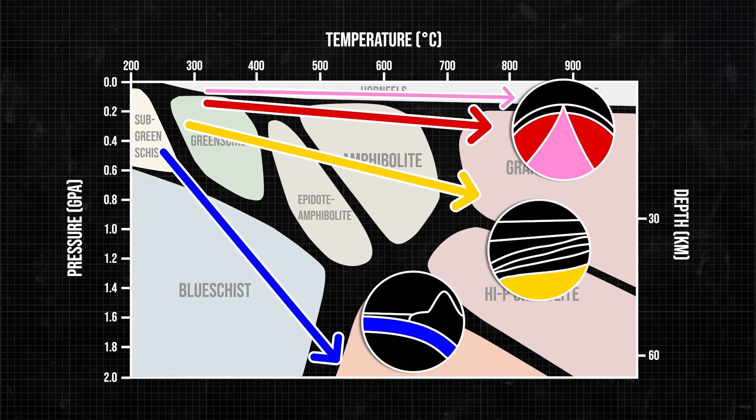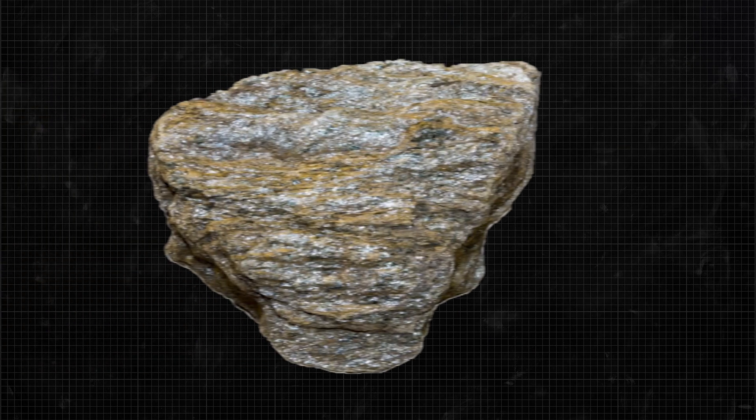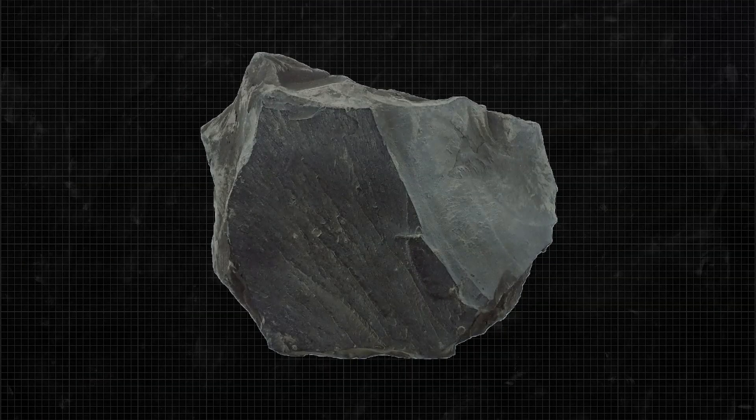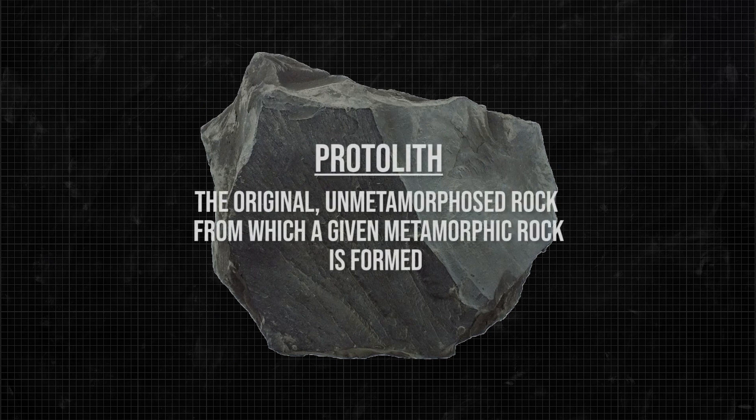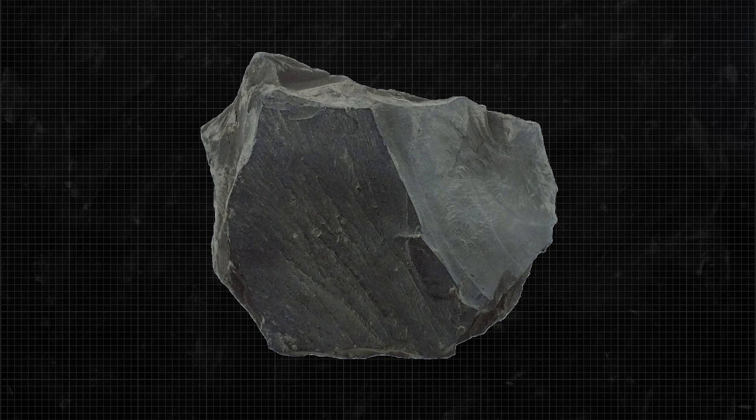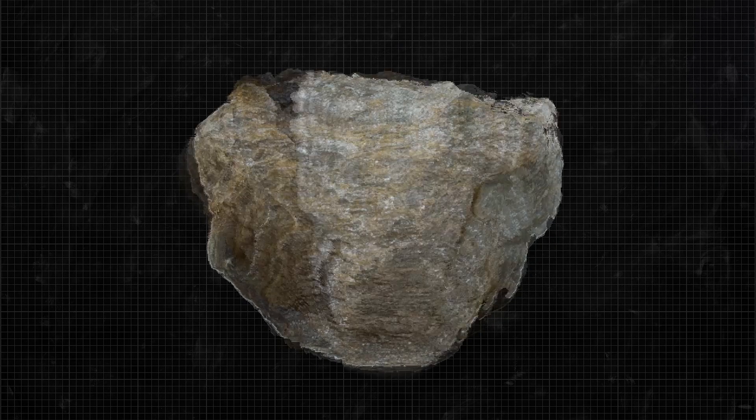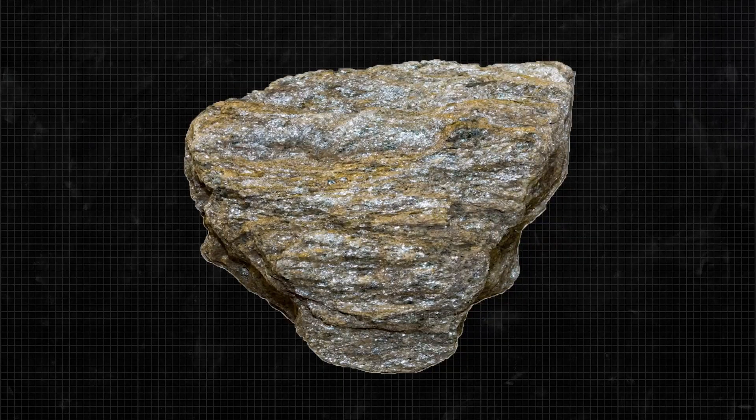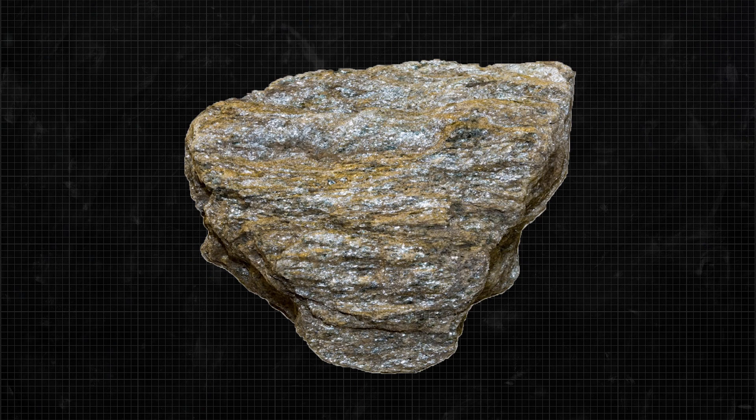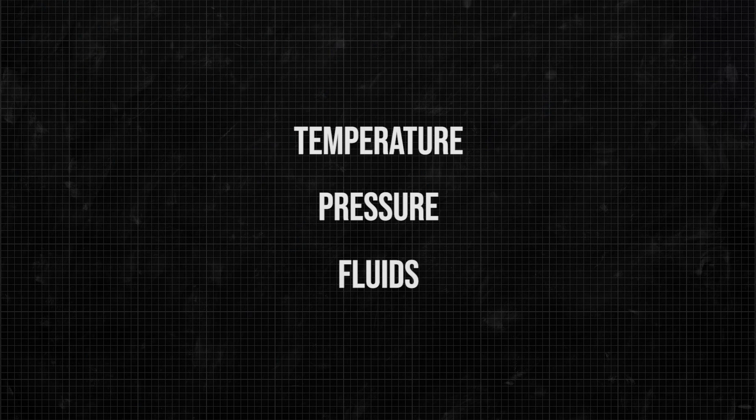Aside from squeezing and heating, metamorphism is also controlled by the composition of the original rock, also called the protolith. The minerals from the protolith will transform to new minerals depending on the conditions at the time the metamorphic rock was formed. Conditions such as temperature, pressure, and fluids.